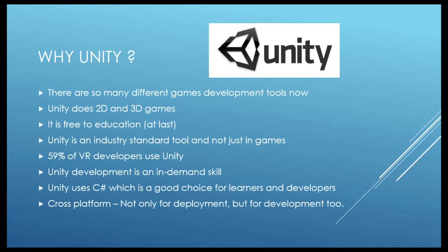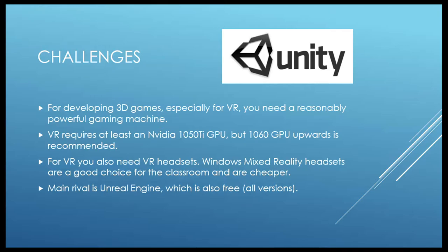One of the main challenges for schools doing VR is cost. The most expensive part isn't the headsets — it's the gaming machine you need to run it. If you're trying to do VR you really do need a 1060 graphics card, which means a laptop costs about a thousand dollars at least. The Windows Mixed Reality headsets are reasonably cheap — you can get them for around two hundred dollars, a lot cheaper than Oculus and Vive. The main rival to Unity is Unreal Engine — used more for triple-A games, and it's the engine Fortnite is made in.